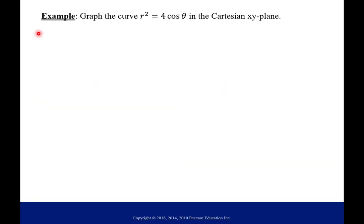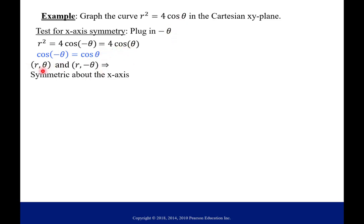Okay everybody, let's finish this up with one more example. So graph the curve r² = 4 cos θ in the xy-plane. We're gonna test for all three symmetries on this one. So x-axis symmetry, plug in -θ, right into our equation. And from what we just talked about, we know cosine of -θ is the same as cosine of θ. And so we have the same equation we started with. And so both points (r, θ) and (r, -θ) are on our graph, which implies symmetry about the x-axis.